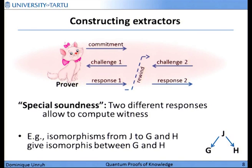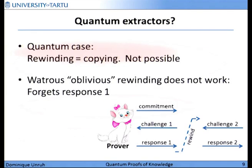What happens if we try to do the same in the quantum case? It doesn't work again. Because, as I said before, rewinding means copying. In this case we would have to store the state, do this interaction, then go back — and going back means taking the copy we made earlier and continuing. Not possible with quantum mechanics.